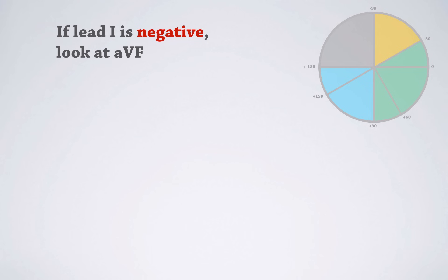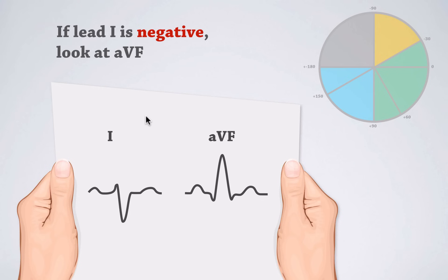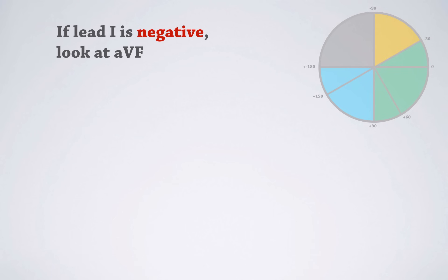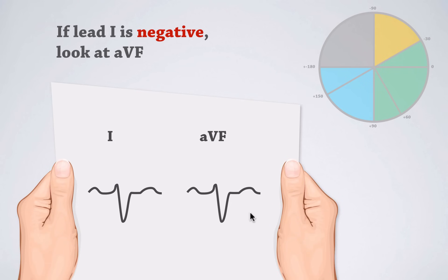If lead one is mainly negative, look at lead AVF instead of lead two. Make sure your left thumb is next to lead one and your right thumb is next to lead AVF. If lead one is mainly negative and lead AVF is mainly positive, you are dealing with right axis deviation. If both lead one and AVF are negative, you are dealing with one of the rare cases of a northwest axis, which some people also call an extreme axis.